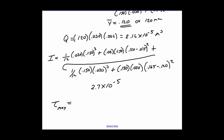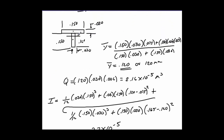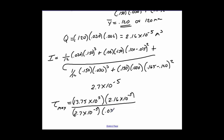At this point you're ready to do the calculation. τ_max equals V times Q over I times t. V is 13.75 times 10 to the third. Q is 2.16 times 10 to the minus 5. I is 2.7 times 10 to the minus 5. And thickness t is 0.030 m. That gives a value of 3.667 times 10 to the sixth newtons per square meter, or 3.67 megapascals.